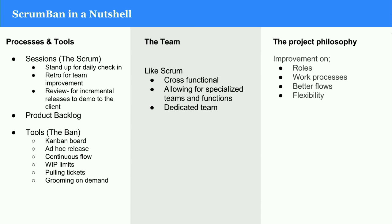Grooming on demand — only when we get things unblocked by the client can we do the grooming, so we're stuck until then. The team shouldn't be idle, so they pull tickets they can work on. Like Scrum, it needs a cross-functional team. I see the top part as the Scrum and this part as the 'ban' in Scrumban — adapt it to what you need. The project philosophy is the same Agile philosophy: the roles, work processes, better flows, and flexibility, all under the title of constant improvement. As long as we're constantly improving and we're Agile, we're still working in the Agile methodology.